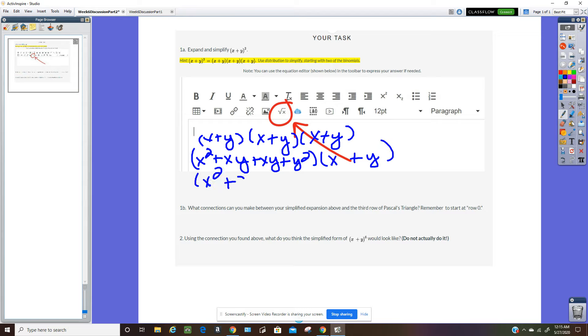You have x squared plus 2xy plus y squared times x plus y. Using the distributive property again, I get x cubed plus x squared y plus 2x squared y, I should say.